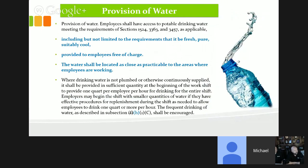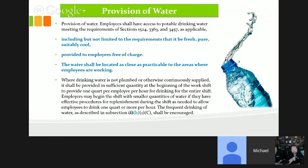Regarding water provision, they've added that water must now be fresh, pure, and suitably cool, provided to employees free of charge, and located as close as practical to the areas where employees are working. In past inspections, water 100 yards away from workers won't meet the standard anymore. Every inspector will interpret 'as close as practically possible' differently, so get it as close as you can.